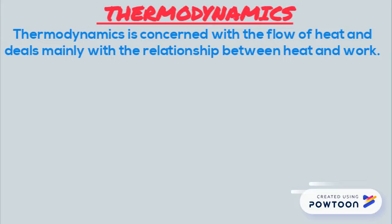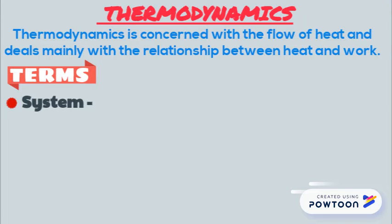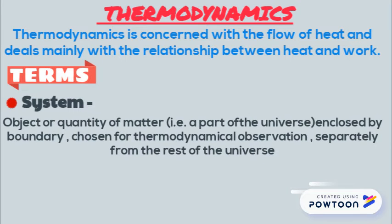So first of all, we have to look at some basic terms. Number 1: System. A boundary-enclosed object or matter which we have chosen for thermodynamical observation, and which is separated from the rest of the universe, is called a System.